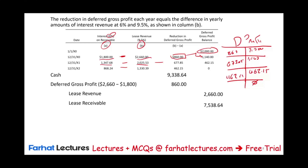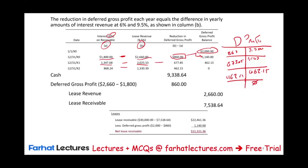You also want to know how things are presented on the balance sheet. The lease receivable at the end of Year 1 is $30,000 minus $7,538.64 reduced during the year, equaling $22,461. The deferred gross profit started at $2,000 and was reduced by $860, leaving $1,140. The net lease receivable — lease receivable minus the deferred gross profit contra asset — gives the net carrying amount on the balance sheet.